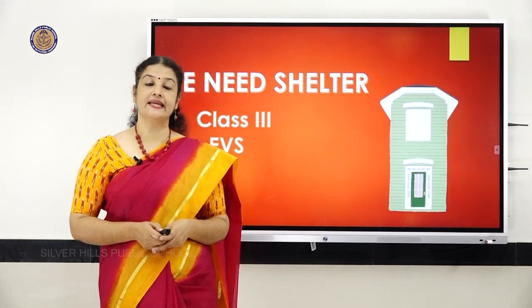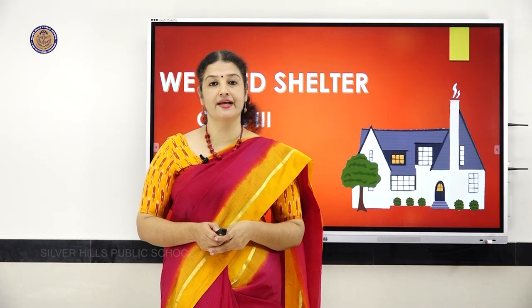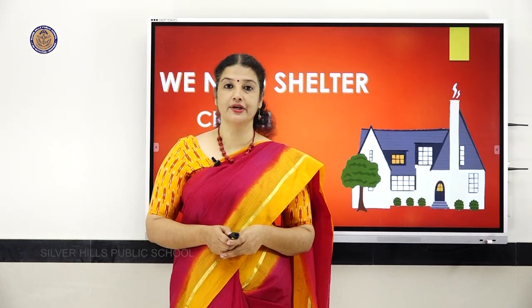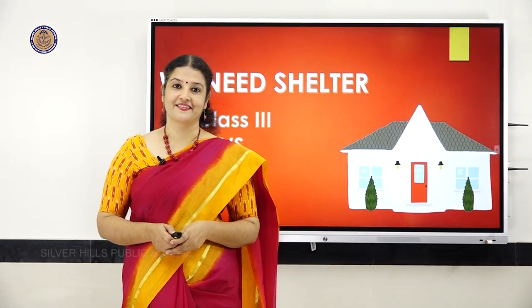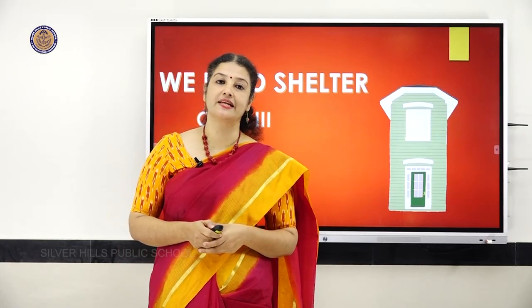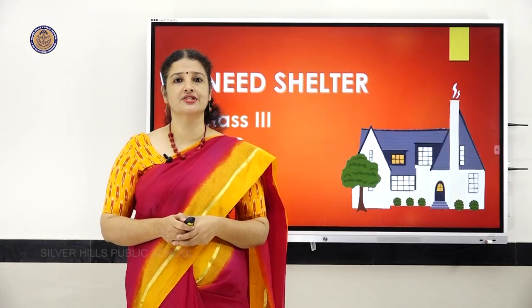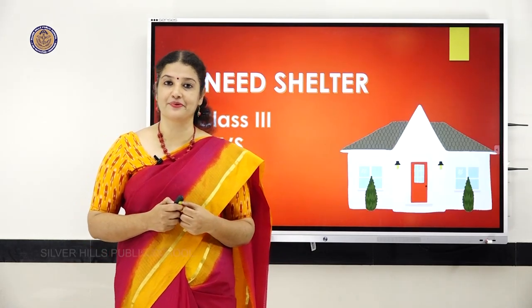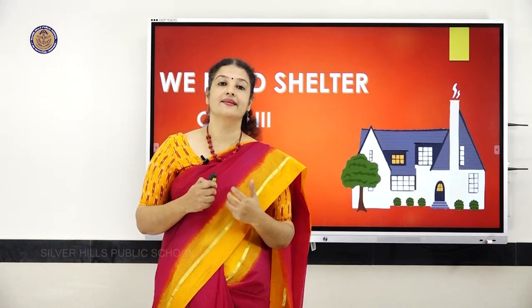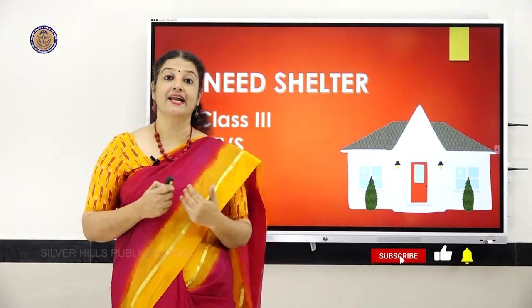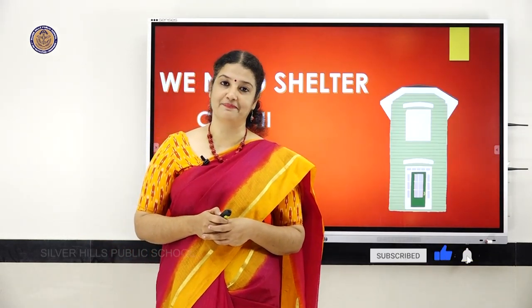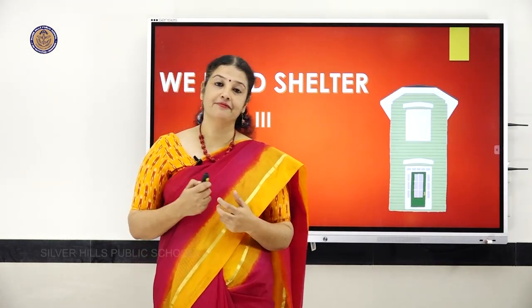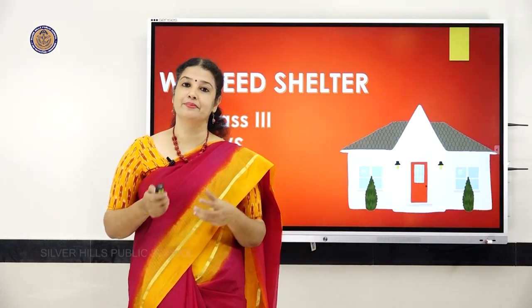Every human being needs certain requirements. These requirements include food, shelter, and clothing. So today we are going to discuss shelter. We all need a house to live in with our family. Our house is not just a concrete building made of cement and bricks. It is made with love, caring, belongingness, and respect that we share with our family members. Our house is an enjoyable place where we learn, live, and love. We learn a lot of values and qualities from the members of our house.